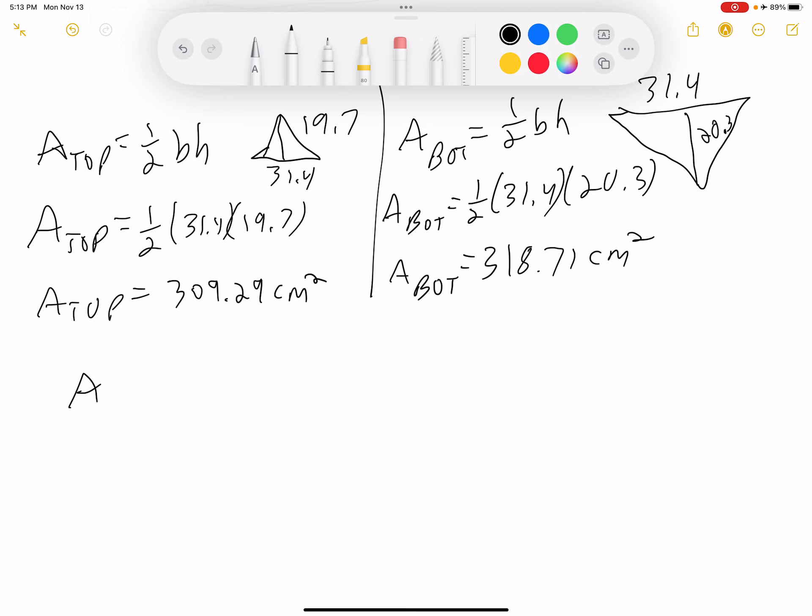So my total area. So my total area, the area of my triangle, is going to be equal to both of those. I've got to combine them. And when I do that, the area of my triangle is 309.29 plus 318.71. I get 628 exactly. 628 exactly. That's kind of crazy. 628 exactly. Okay.